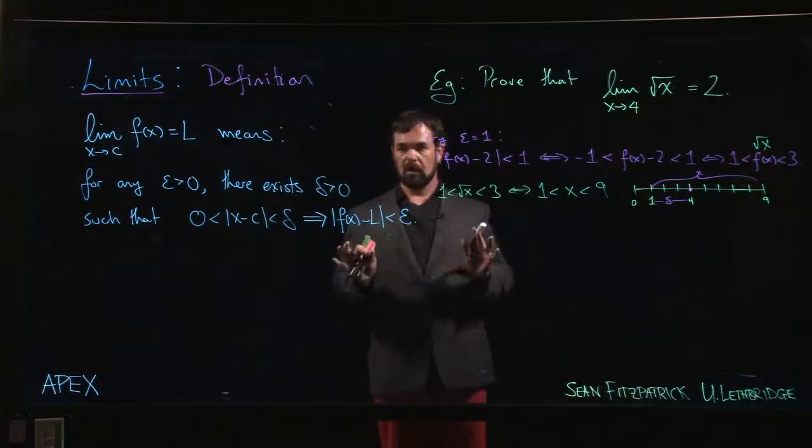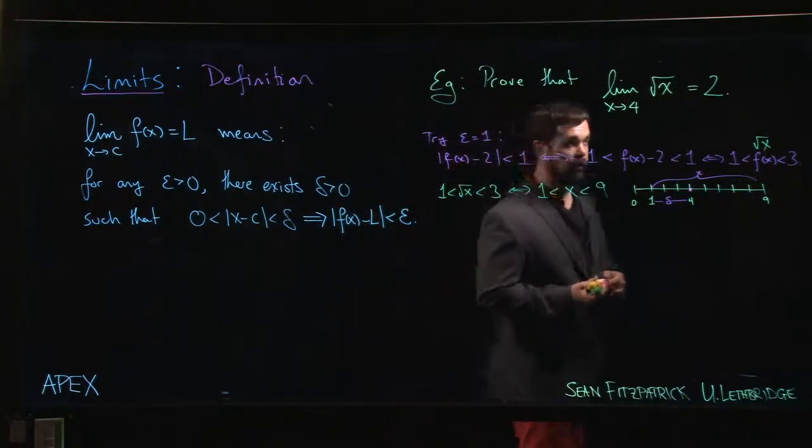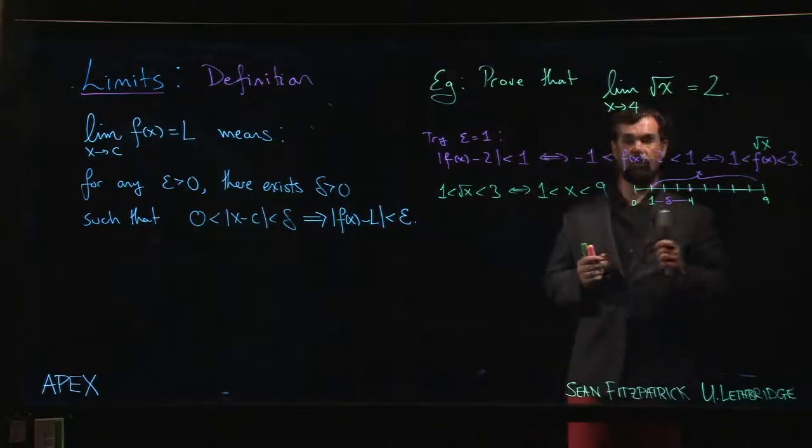Okay, so we're looking at how to prove that the limit as x approaches 4 of square root function is equal to 2.